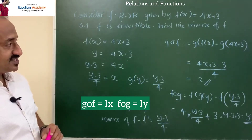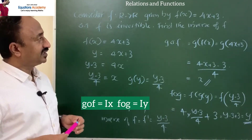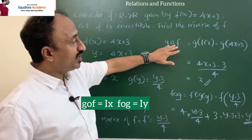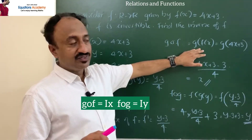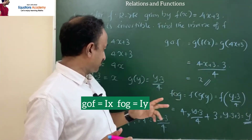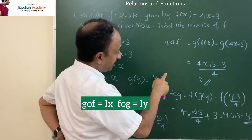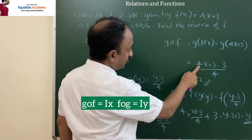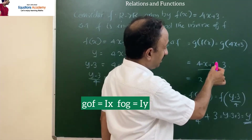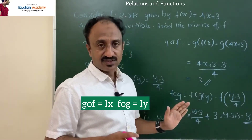Now we verify. g∘f: g(f(x)) = g(4x + 3). Since g(y) = (y − 3)/4, substituting y = 4x + 3 gives (4x + 3 − 3)/4 = 4x/4 = x. So g∘f = x, which is I_X. One part is proved.